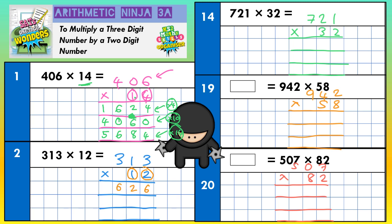On your second line, you're going to times everything by the 1, but remember the 1 doesn't mean 1 — it means 10, because it's in the tens column. So put the magic zero in, and then go 1 lot of 3, 1 lot of 1, 1 lot of 3 in that order. 1 lot of 3 is 3, 1 lot of 1 is 1, 1 lot of 3 is 3.